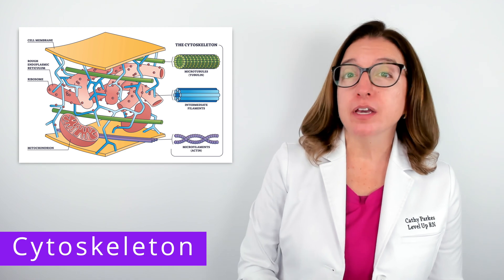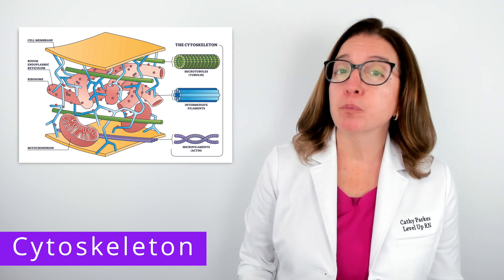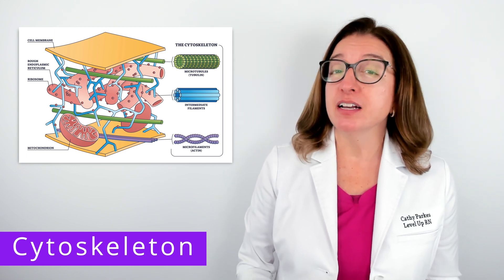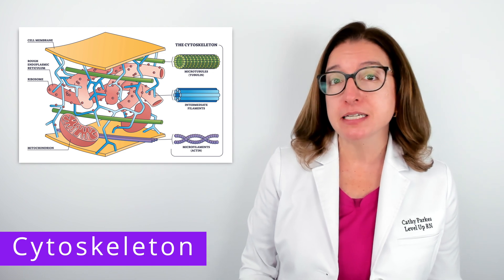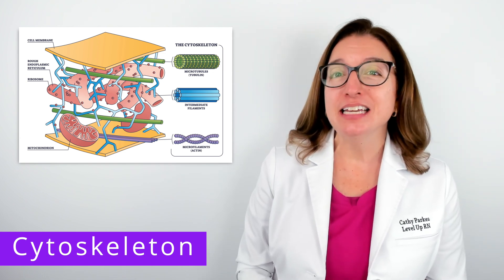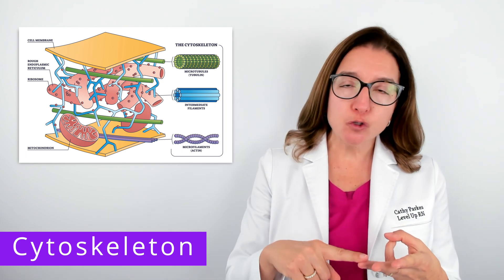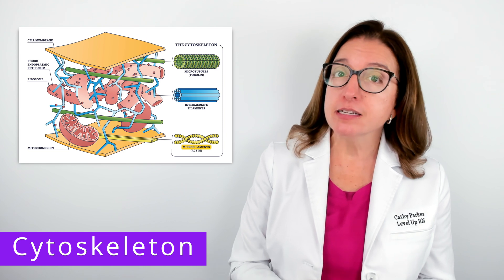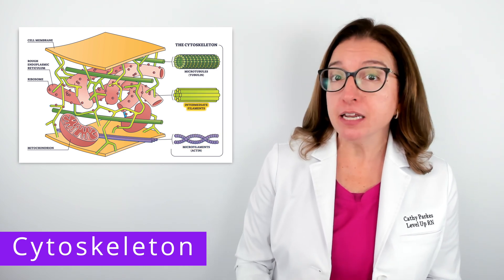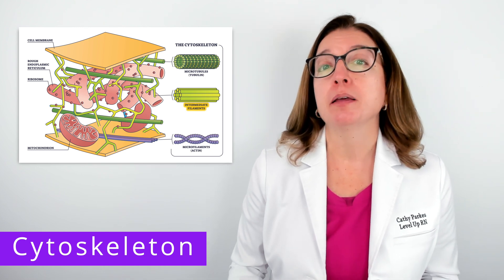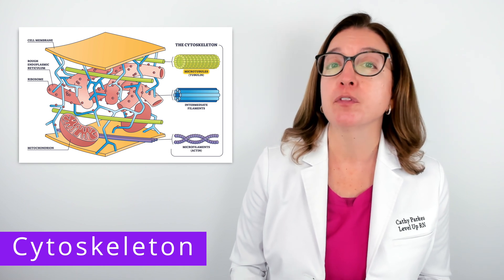Within the cytoplasm of a eukaryotic cell, you will find the cytoskeleton, which is a matrix of protein fibers and tubes that provides structural support for the cell and also allows for the transportation of substances throughout the cell. The cytoskeleton is made up of microfilaments, intermediate filaments, and microtubules. Microfilaments are long rod-like structures composed of actin. Intermediate filaments are fibers composed of polypeptides. And microtubules are hollow tubes composed of the protein tubulin.